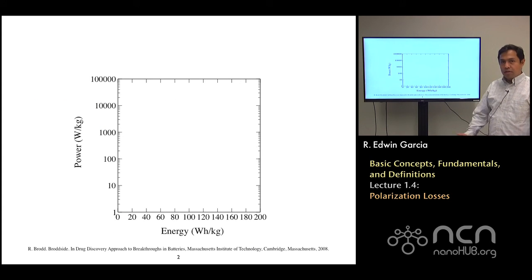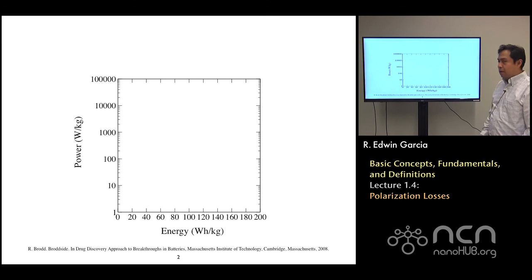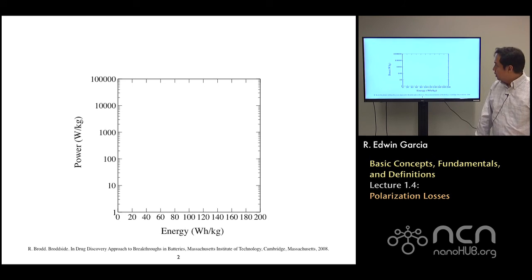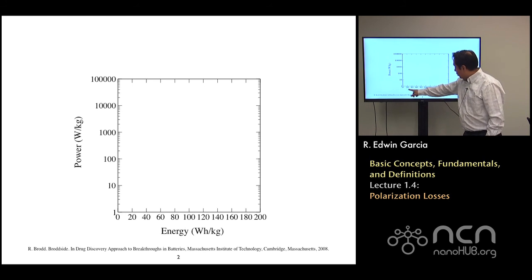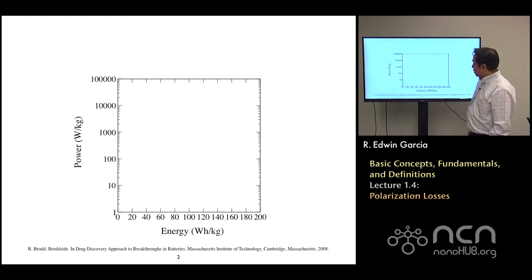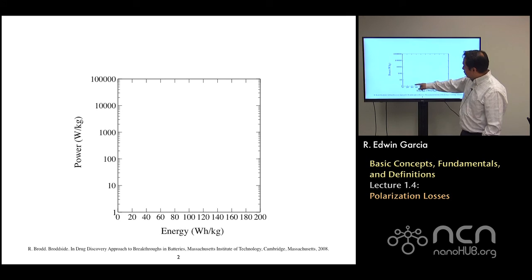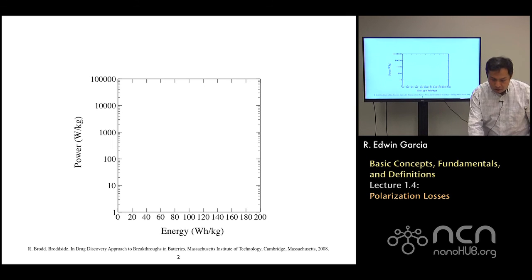What we were discussing in the last lecture, we were talking about a means to benchmark the different types of chemistry, different types of batteries. This was done in terms of a map that on the x-axis has energy density, and on the vertical axis has power density.